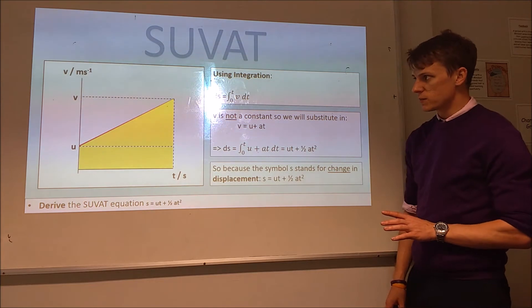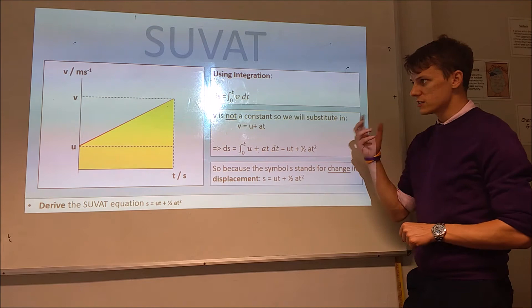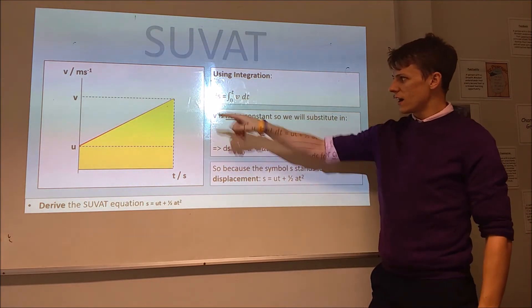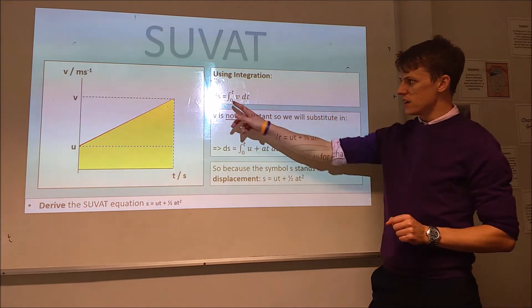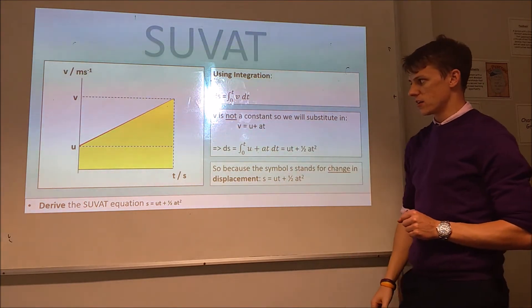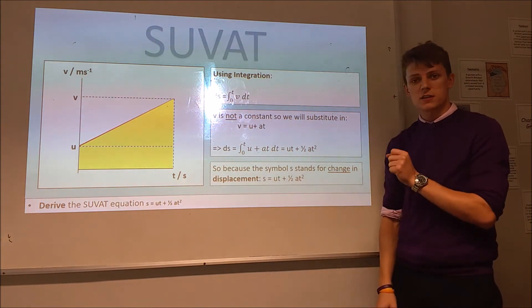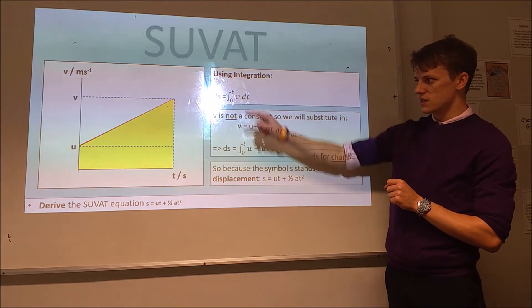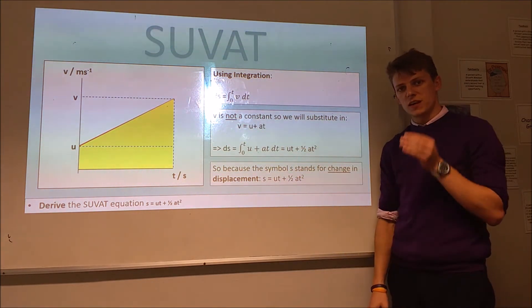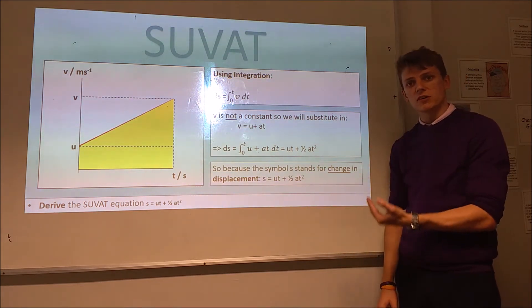Next, we're going to jump to a velocity versus time graph. So, you should know that the area under this graph is the change in displacement, or in calculus, that means that the change in displacement is the integration between zero and t of the velocity with respect to time. So, the difference this time is the velocity of an object is not constant, because we can see the velocity is changing all the time. So, what we have to do is substitute in something for velocity at which there is only a function of time.